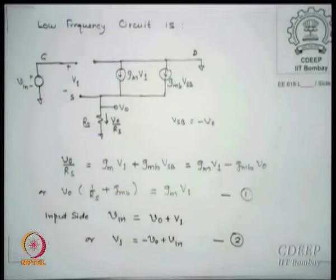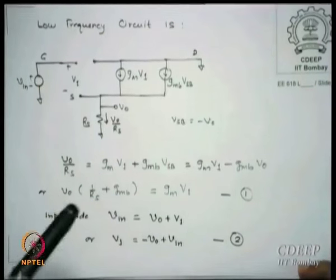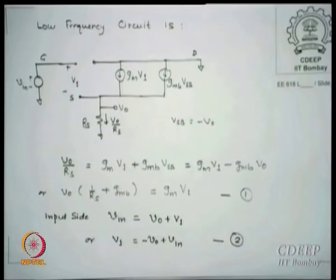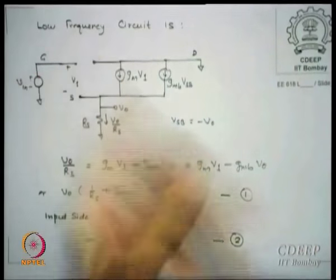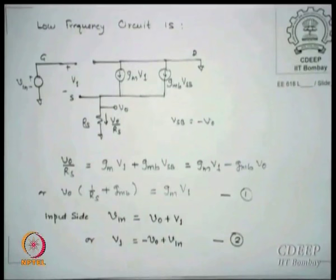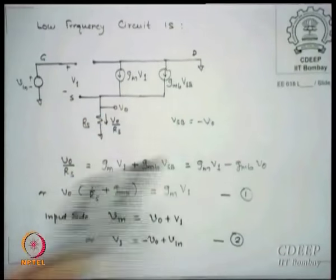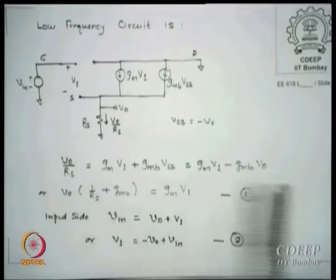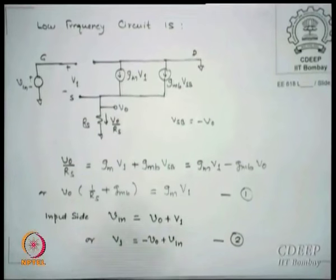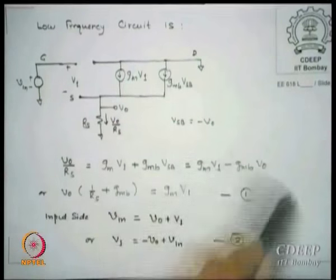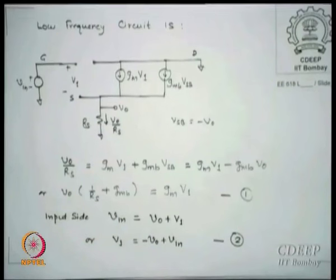Assuming R0 is very high and neglecting it: if V0 is the output, the current in Rs is V0/Rs. Since this is downward, the voltage with reference to ground becomes −V0. Substituting: V0/Rs = Gm·V1 + Gmb·Vsb. Note: I have sometimes written VBS and sometimes VSB — please keep in mind VSB = −VBS. Assume whatever sign I am showing corresponds to pushing current downward.